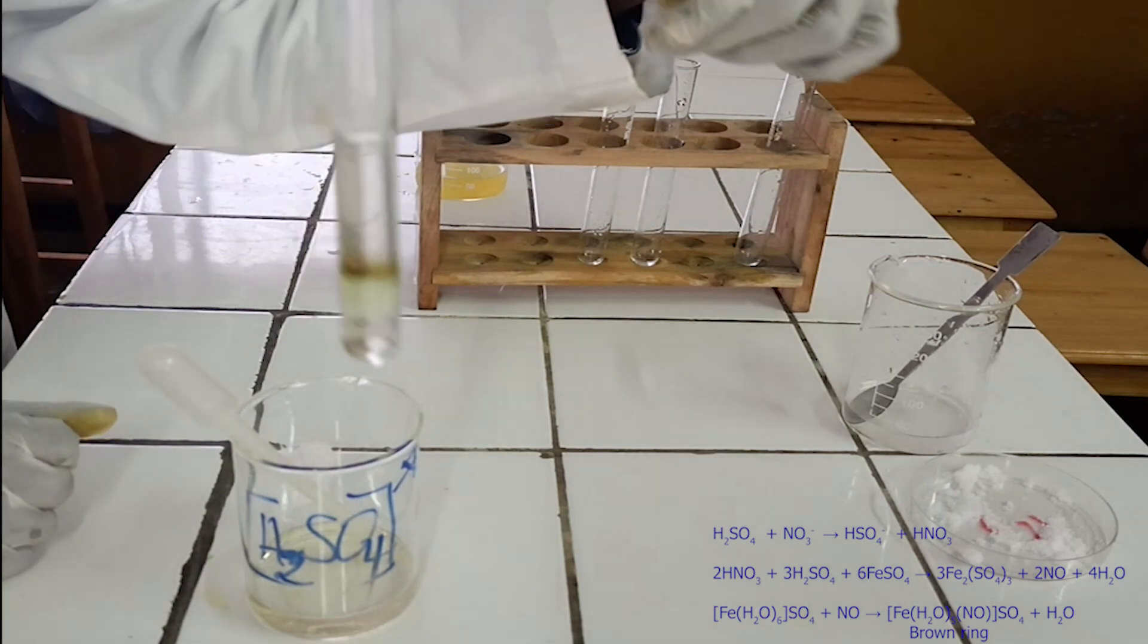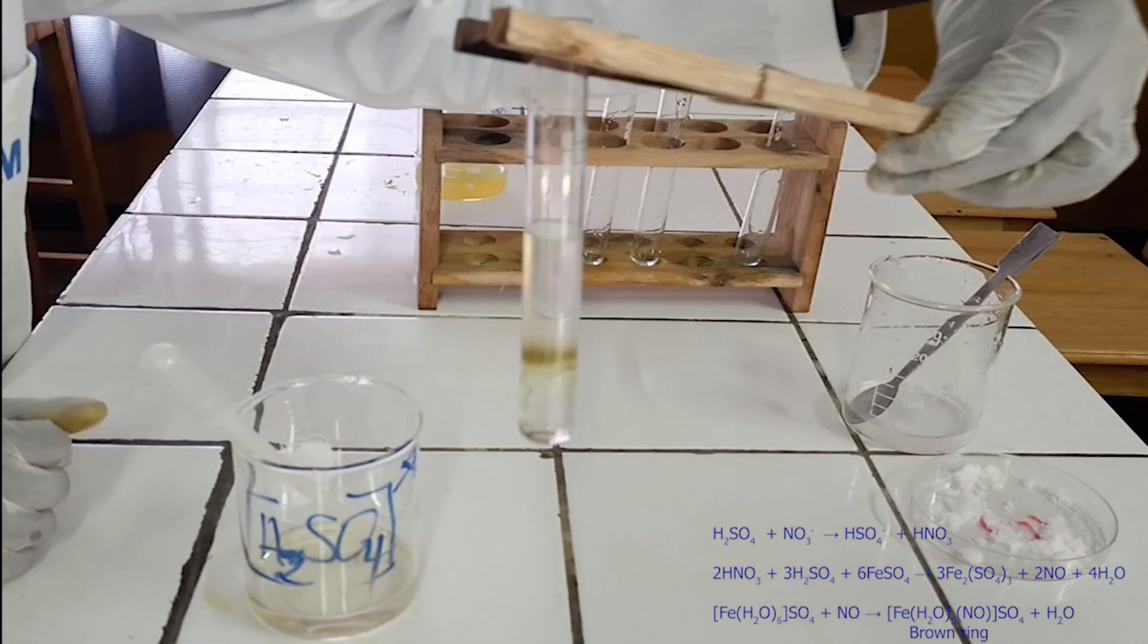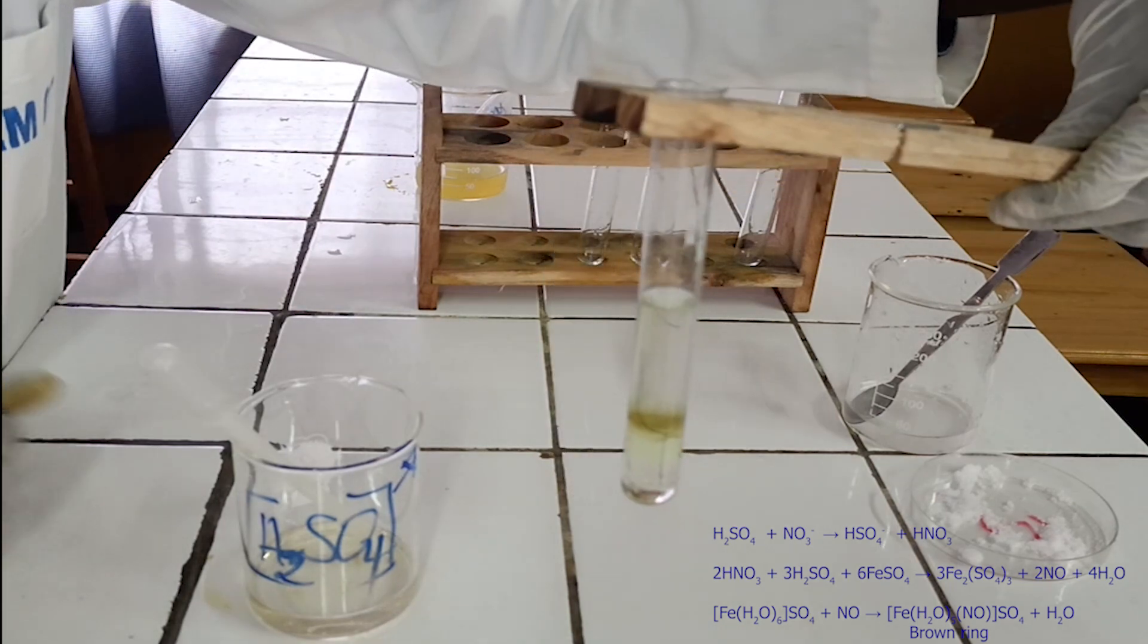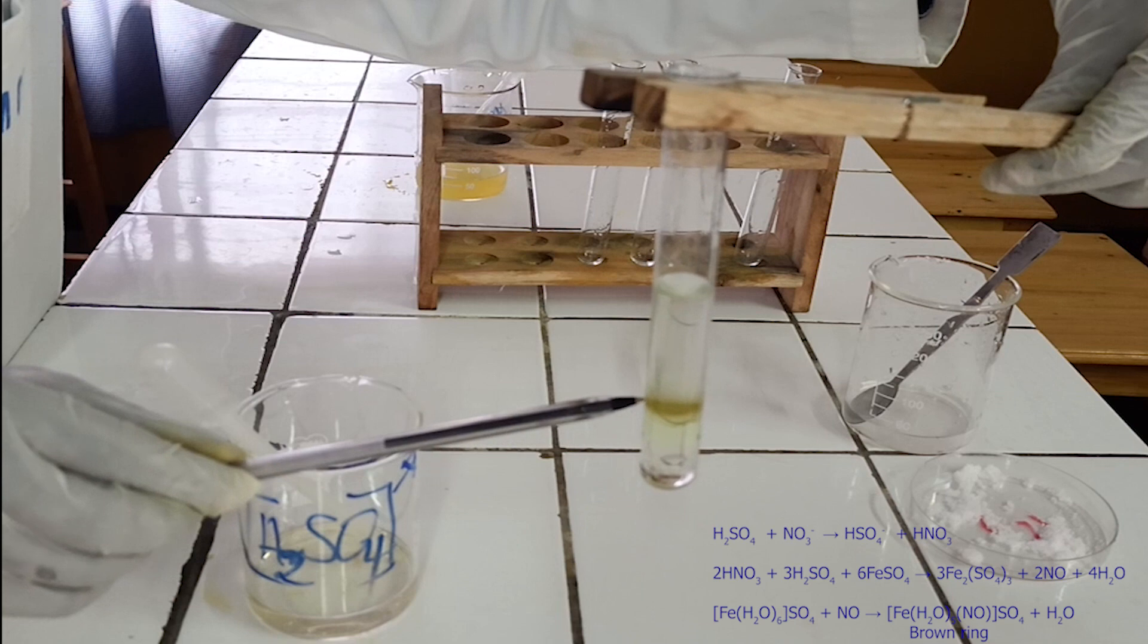The brown ring test or nitrate test is a reduction reaction. The nitrate is reduced to nitrogen monoxide by iron-2-ion from iron-2-sulfate.